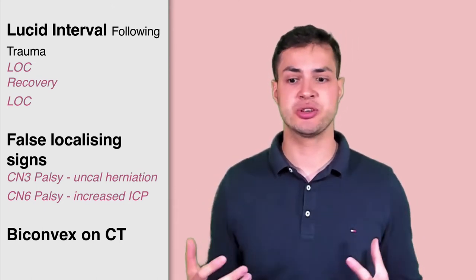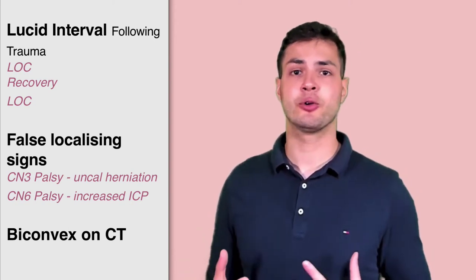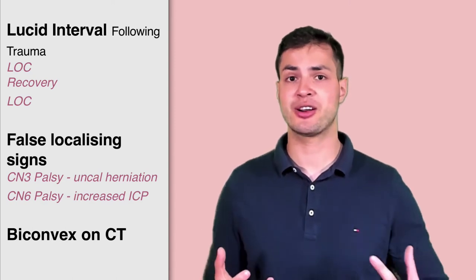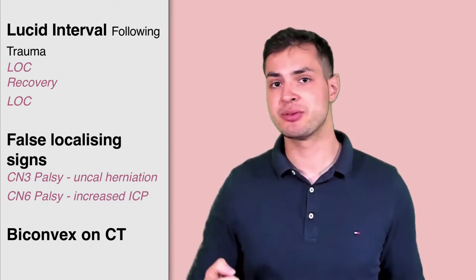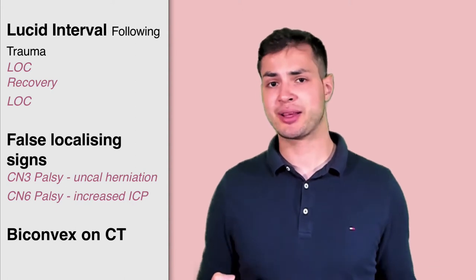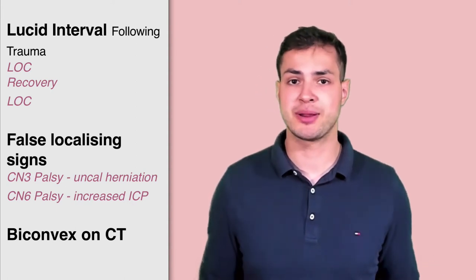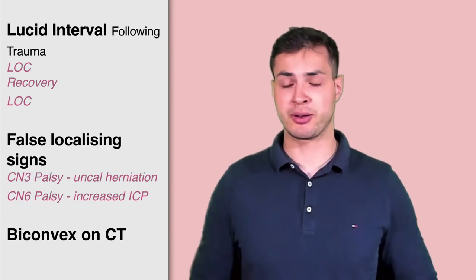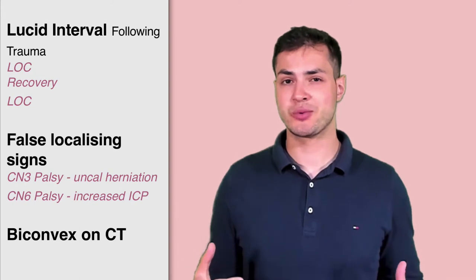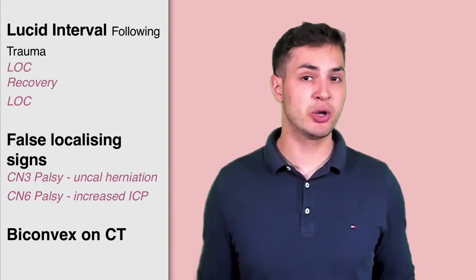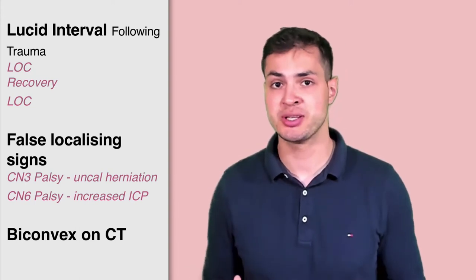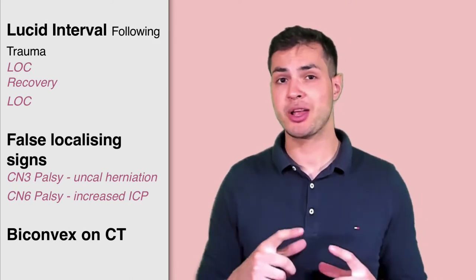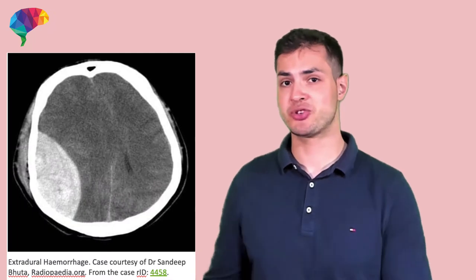Other signs you could find include false localizing signs such as a third nerve palsy, caused by uncal herniation pressing on the third nerve. You could also get a sixth nerve palsy from raised intracranial pressure, because the sixth nerve has a very long course through the brain. If the GCS drops below eight, you need to intubate the patient. Get a CT scan — you'll find a biconvex-shaped hemorrhage as seen on the image.